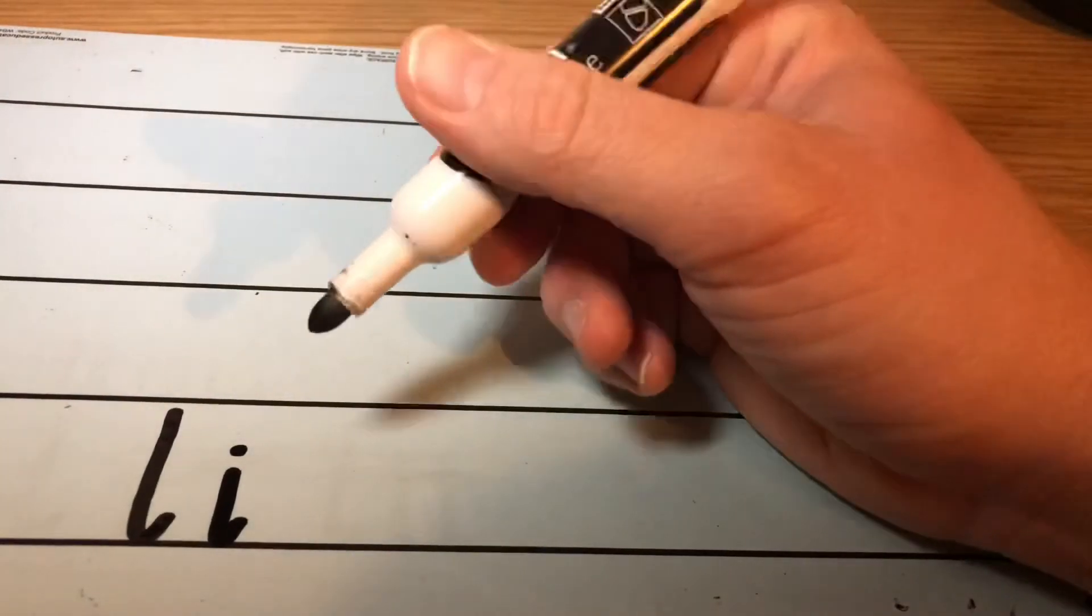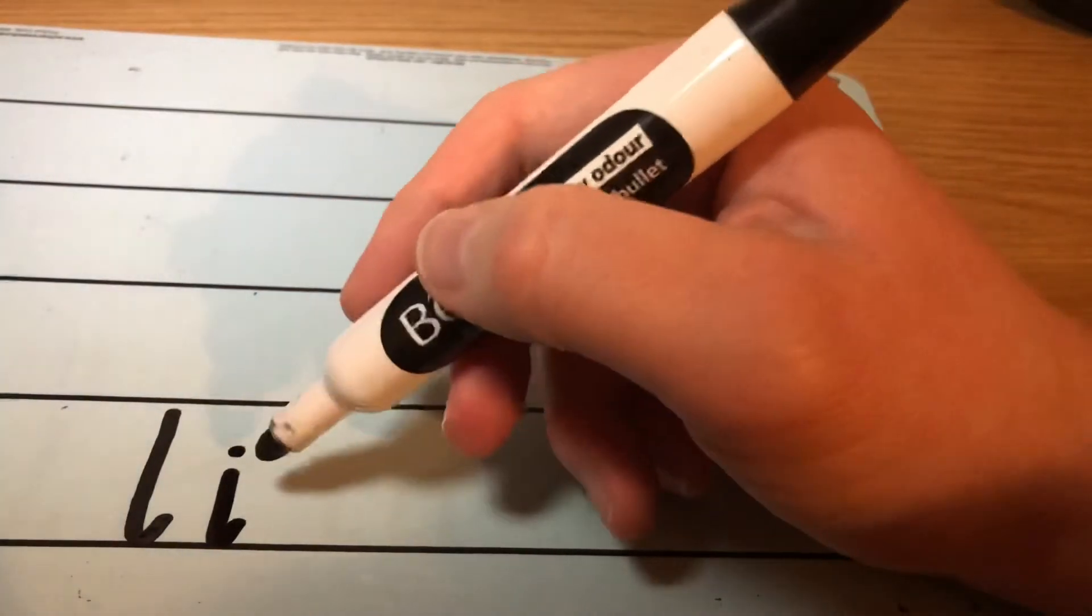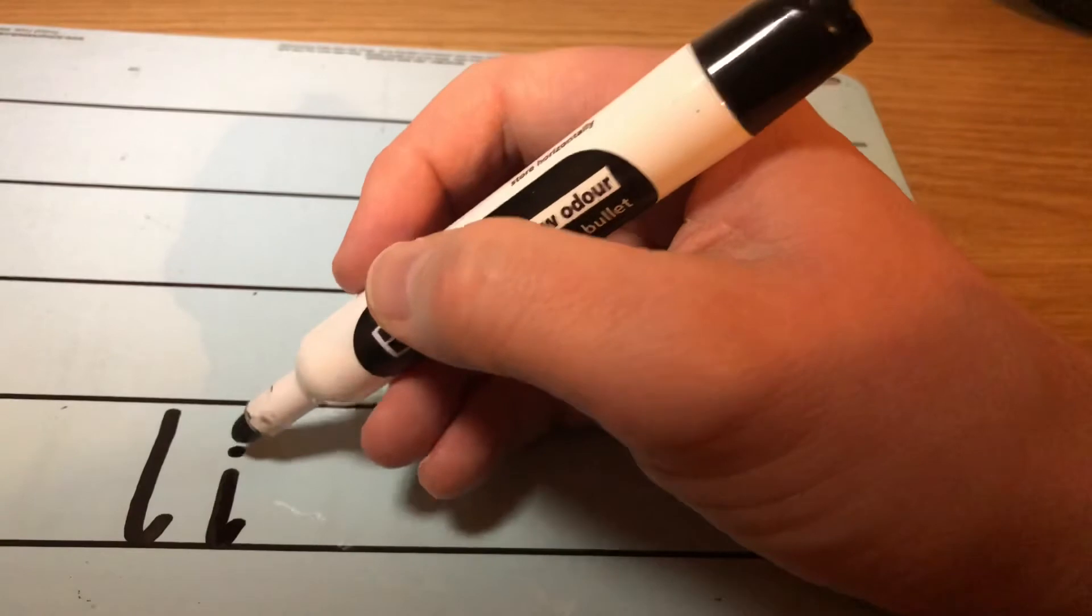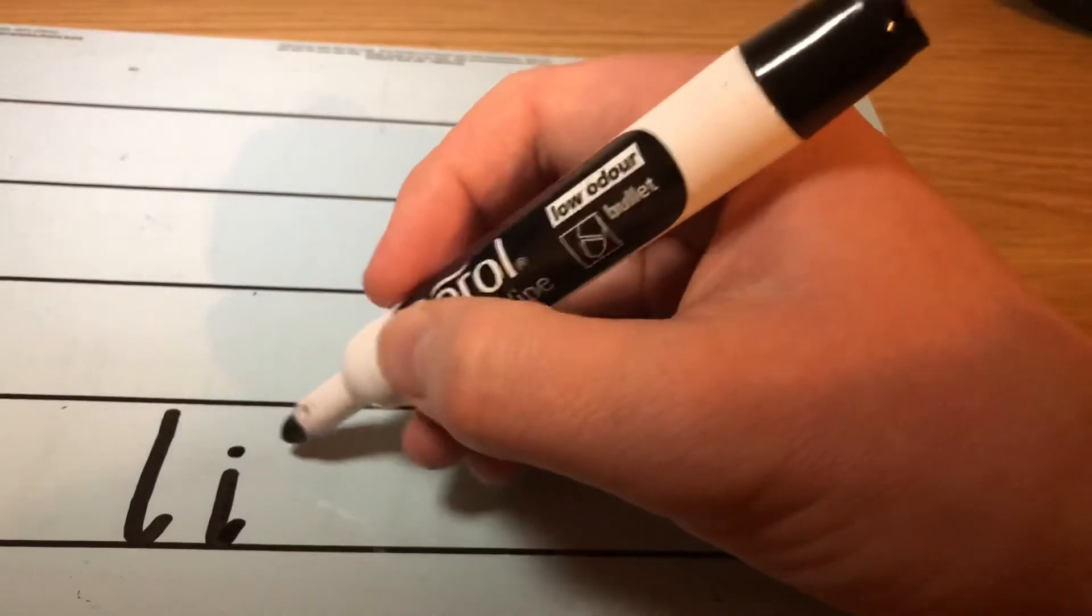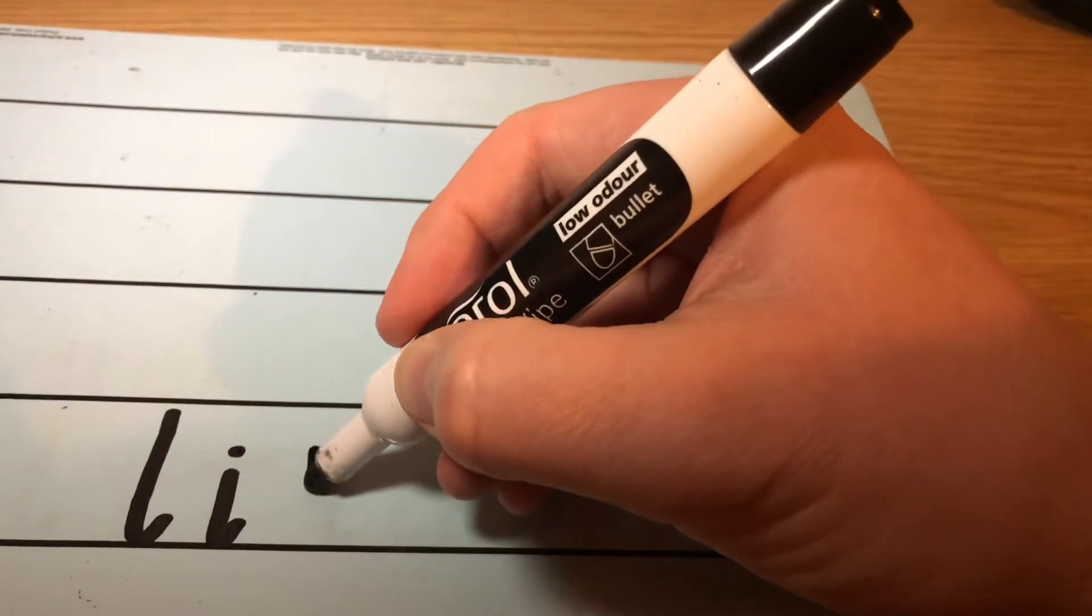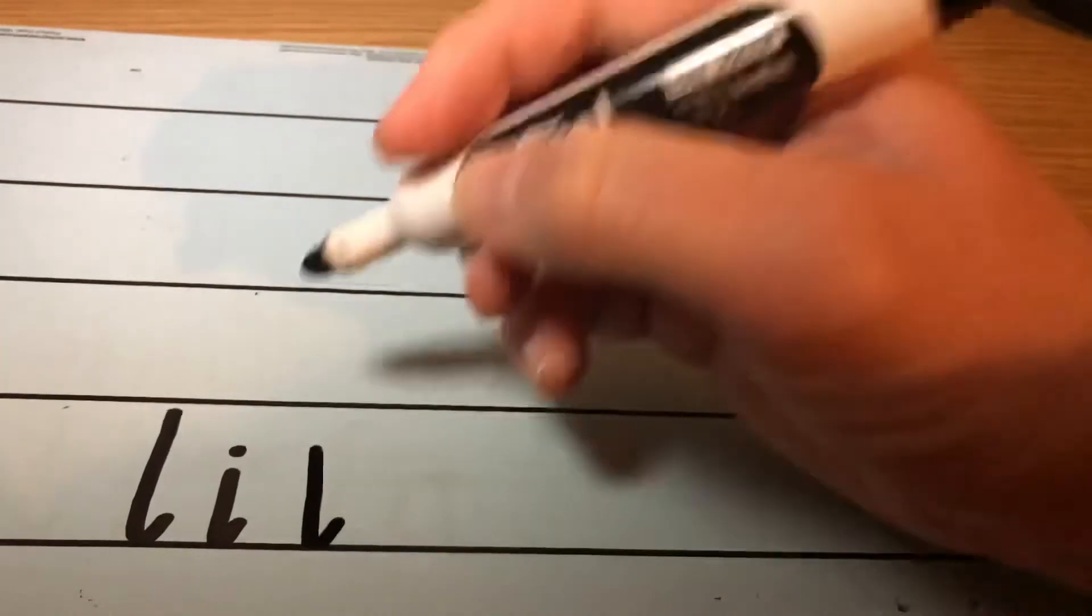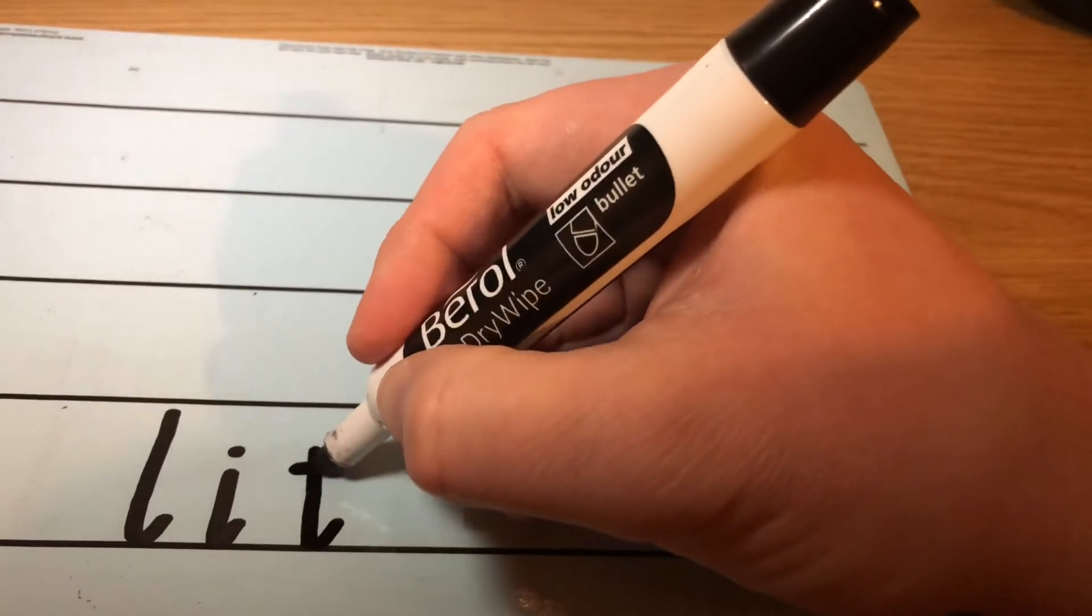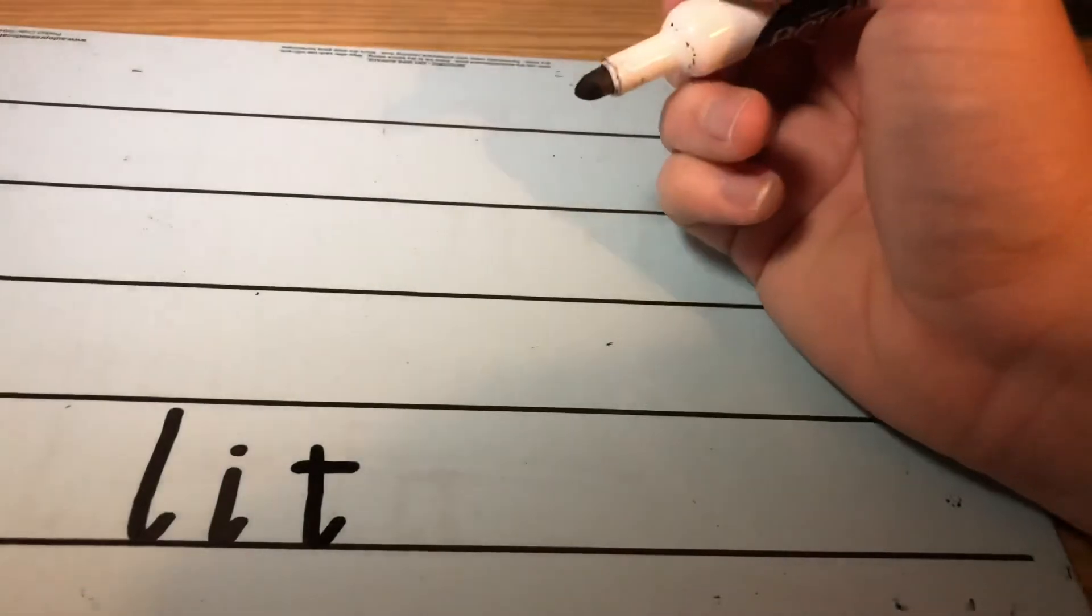And remember the t isn't as long as the l, but has to start taller than the i, because we've got that line that goes across. So where the dot is there, I'm going to come all the way down, flick, and then go across at the height of that i.